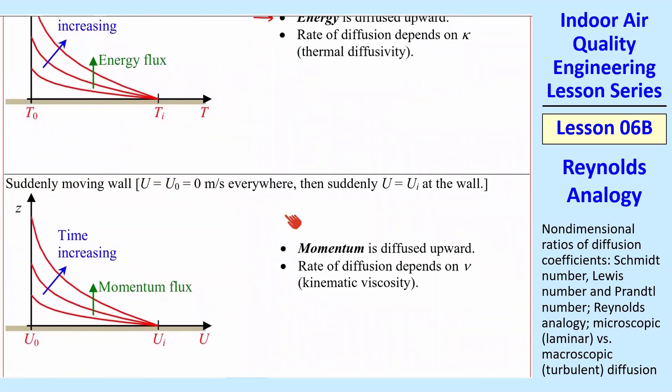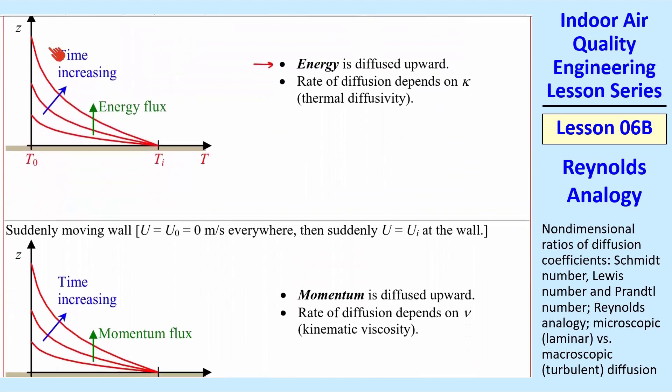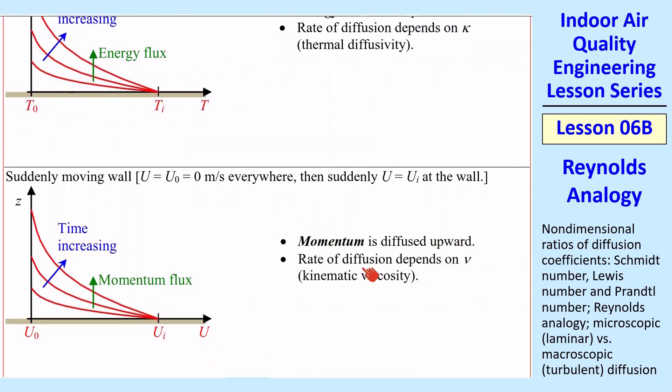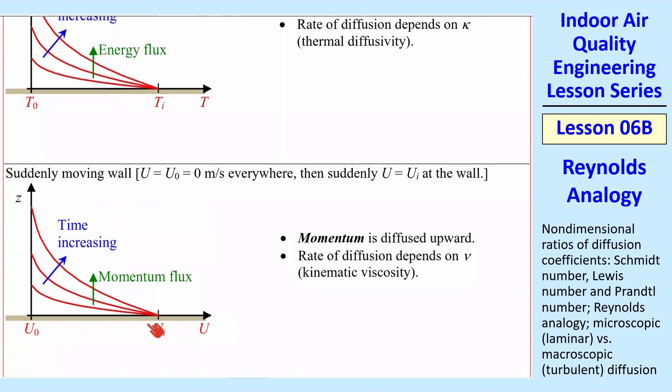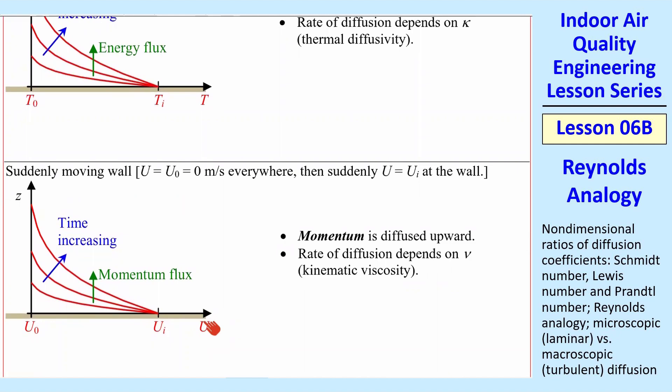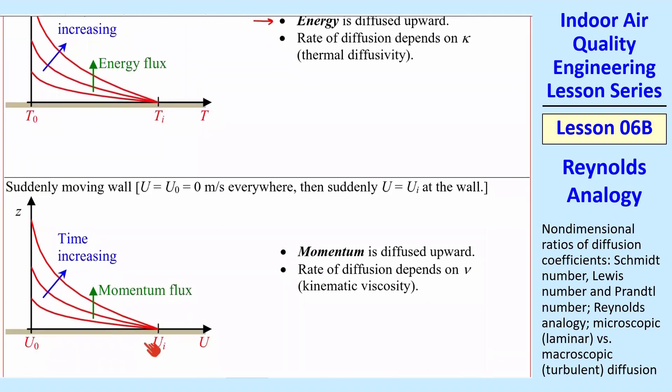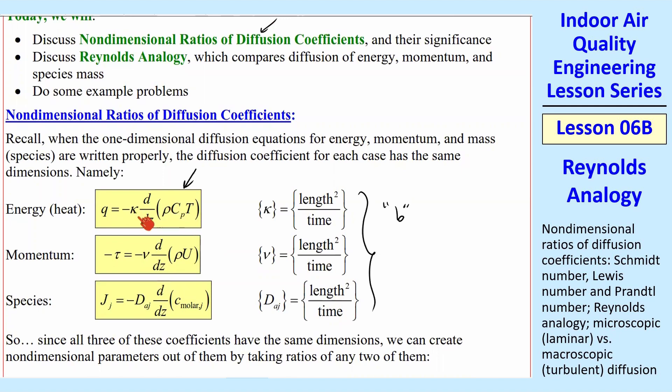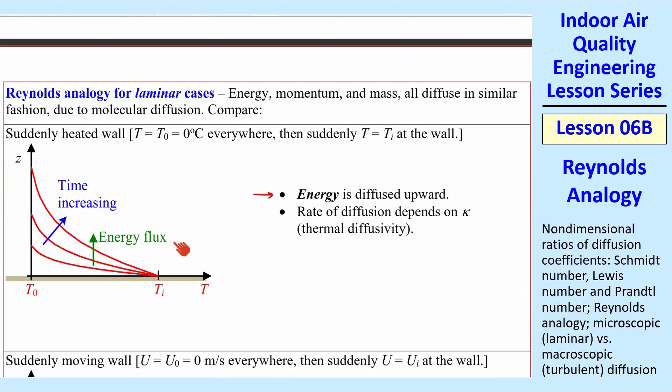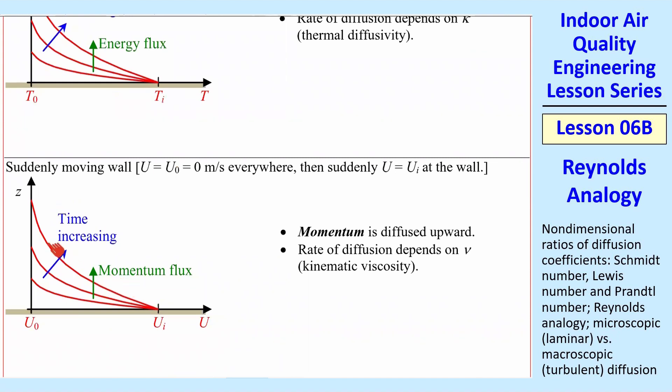We can make an analogy here. Reynolds argued that momentum is diffused upward in the same way, except it has a different diffusion coefficient, nu, which is the kinematic viscosity. So you can visualize this as a flat plate, that everything's zero velocity in the room, and then suddenly this plate starts moving at velocity u, speed u to the right. And so you get this boundary layer building up. I literally copied and pasted this figure and changed the labels because it's exactly the same process. Mathematically, we have the same equations. These are all the 1D diffusion equations just with different properties.